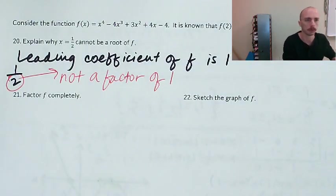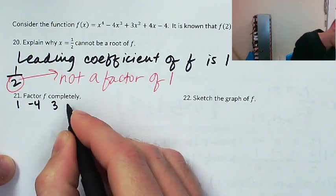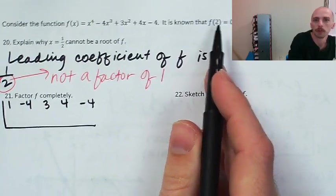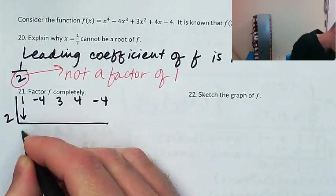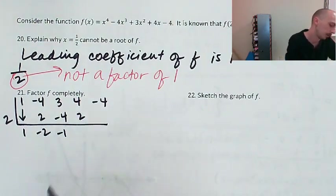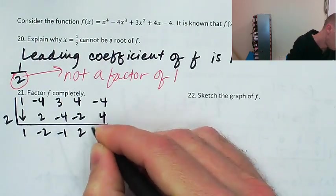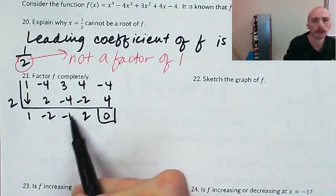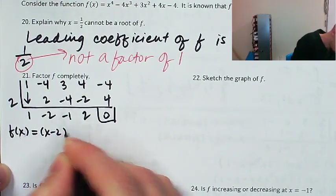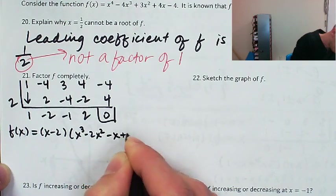Had this not been factorable, I would have tried running x equals 2 through synthetic division again to see if it's a double root, which would knock it down to a quadratic. So I'm going to take 1x to the fourth, negative 4x cubed, positive 3x squared, positive 4x, and negative 4, and divide by x minus 2. Negative 1 times 2 would be negative 2, giving positive 2, then 4, then 0.